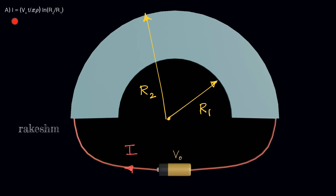For the first part, we have the potential difference V0 applied across this strip and we need to find the current I. If we can find the resistance of this strip, then we can find the current I as V divided by resistance. Since this conductor is non-uniform, we need to use the method of integration.